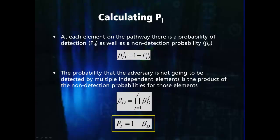Calculating the probability of interruption is similar to calculating the total detection probability of multiple complementary sensors. We will use the non-detection probability of each detection point before the critical detection point, which is the probability that the adversary is not detected at each of these points. We can then multiply all of these together to get the probability that the adversary is not detected up to the critical detection point. Detection after the critical detection point is not included because the response force will not have enough time to respond to alarms at these sensors. The probability of interruption is then simply 1 minus this value.